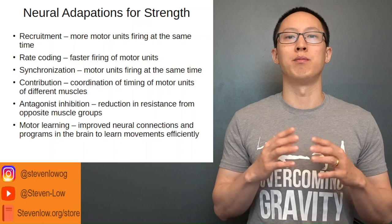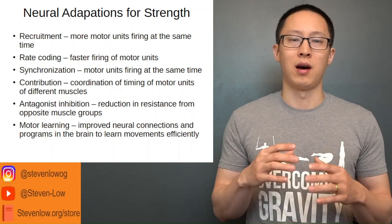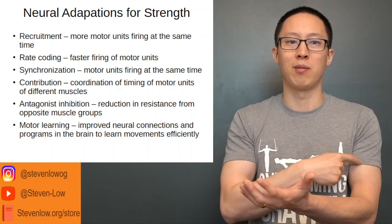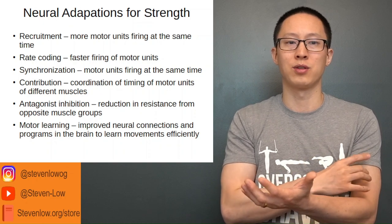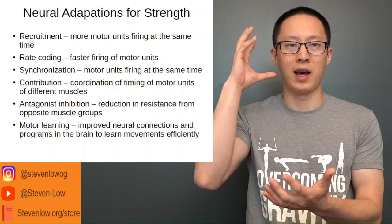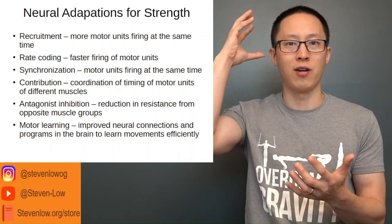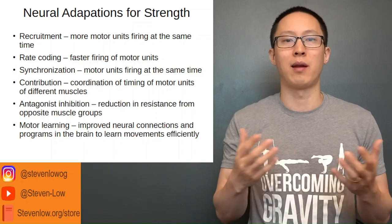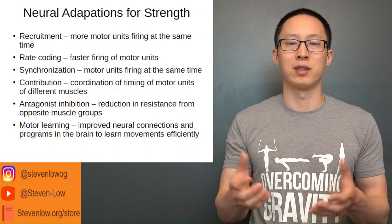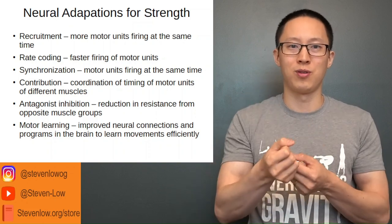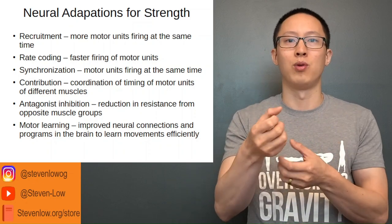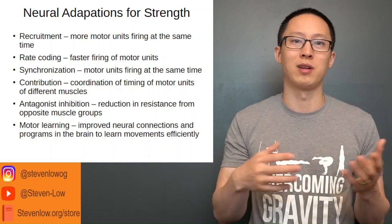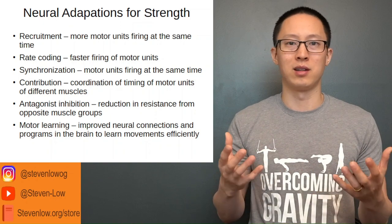Synchronization is basically more motor units firing at the same time. Motor units connect to various fibers within the muscle randomly, and when your brain wants to fire them all at the same time, it's kind of like tug of war — if people are pulling out of sync, they can't pull as effectively as all the people on the same side pulling at once. You get more force output because pulling at the same time gives more force than people pulling at different times. So that's a good analogy for synchronization.